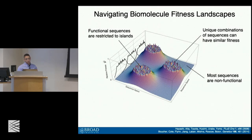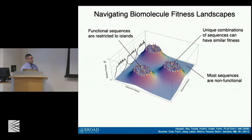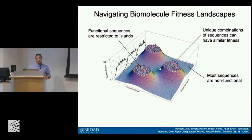An especially interesting point, which I'll touch on multiple times, is that there are a number of unique combinations in sequence space that can often give rise to very similar levels of activity and therefore have very similar fitness. So when we as synthetic biologists or bioengineers are thinking about doing directed evolution, often we start off with a biomolecule that sits somewhere in this fitness landscape, and that biomolecule has a given amount of fitness.